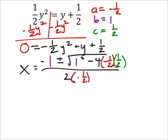So now x equals that's still a negative one, but plus or minus the square root of one squared is one, minus four times negative one-half times one-half, that ends up being a negative one.